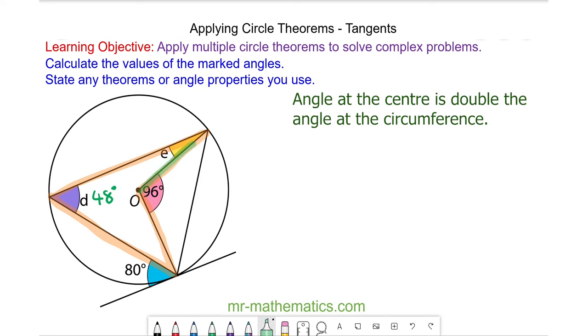And here we have an isosceles triangle because two lengths are the radius of the circle here and here. So the two base angles will add up to 84, which means they must be 42 degrees each.